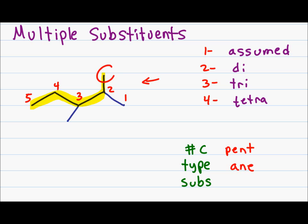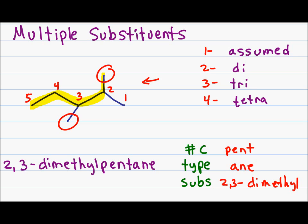Now let's look at substituents. I have two of the same type — both methyl groups occurring at carbon two and carbon three. I call them dimethyl to show I have two, but I also have to specify which carbon each one is on. Since one is on carbon two and one is on carbon three, my substituents will be 2,3-dimethyl. Recall that the comma goes between two numbers but a dash goes between a number and a letter. Putting it together: 2,3-dimethylpentane.